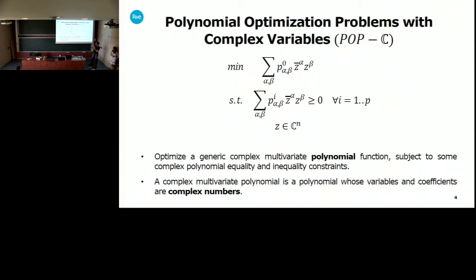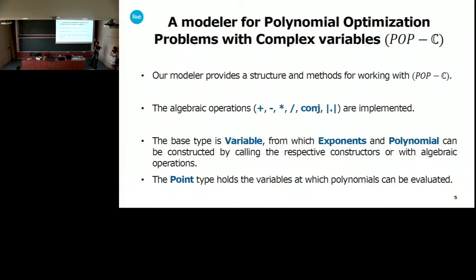So how do we work with these polynomials and constraints? We have defined several structures to deal with these optimization problems, and we define the algebraic operators in order to construct polynomials in an easy way. There are several types which are used to build up the polynomials. We start from variables, and then from those we build exponents from which we can build polynomials, either with the constructors or with the algebraic operators. We also have a point type that we can use to evaluate the polynomials.